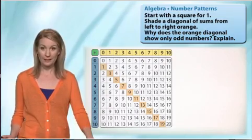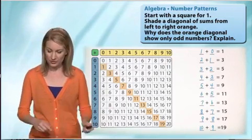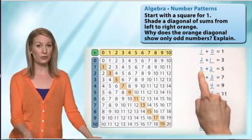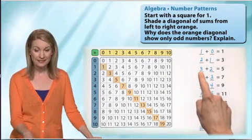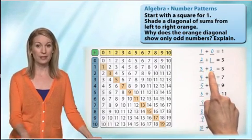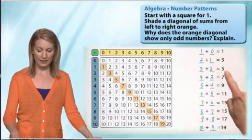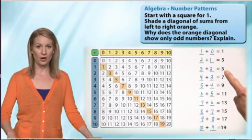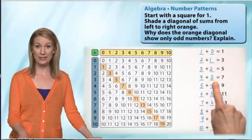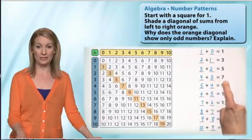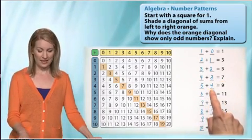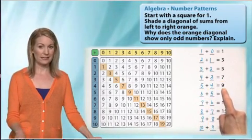So going back, let's go ahead and start with the 3 plus 2. Do you see that 3 is odd and 2 is even? So we have an odd number plus an even number. And look at our result. It's odd. Let's keep going. 4 is even. 3 is odd. And our result is odd. 5 is odd. 4 is even. The result is odd.